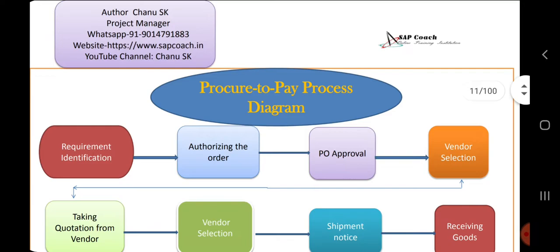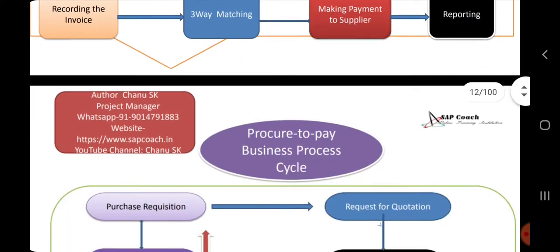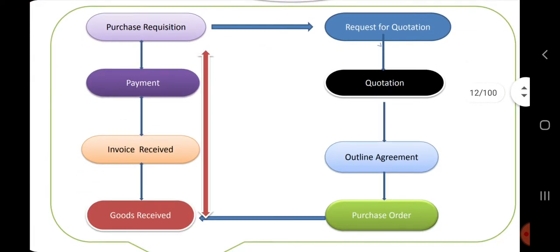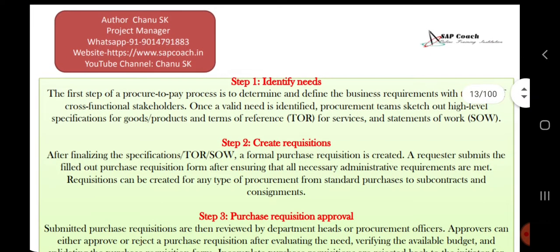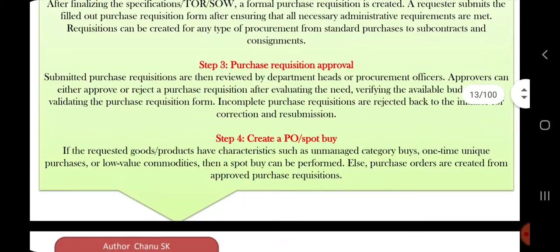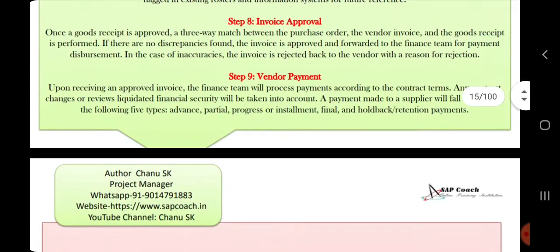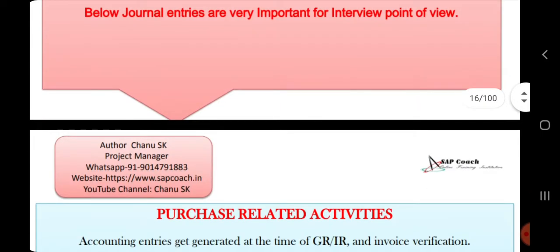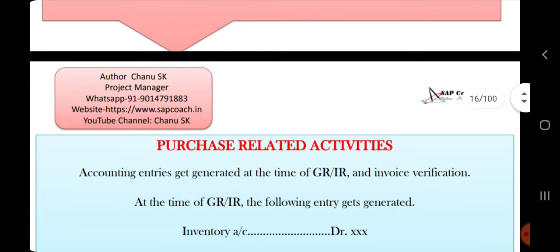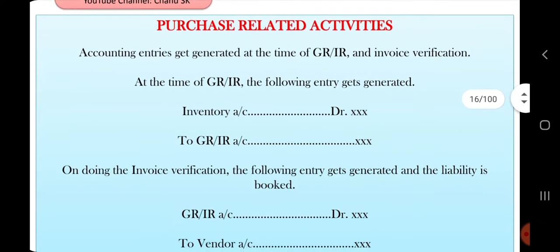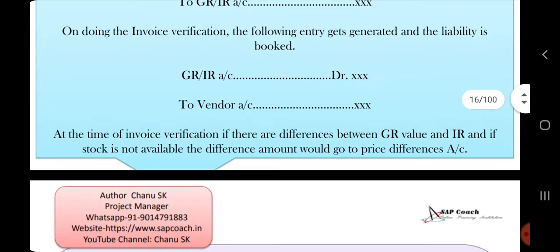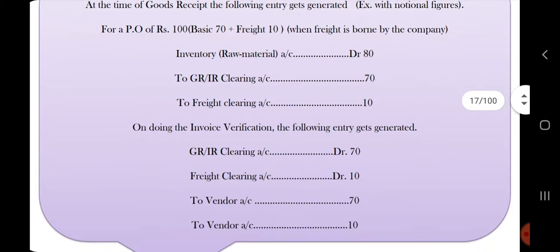The book also includes the P2P diagram and a clear process cycle with all related steps. Journal entries are very important from an end-user point of view, at the senior accountant level, for freshers, and for accounts payable jobs.